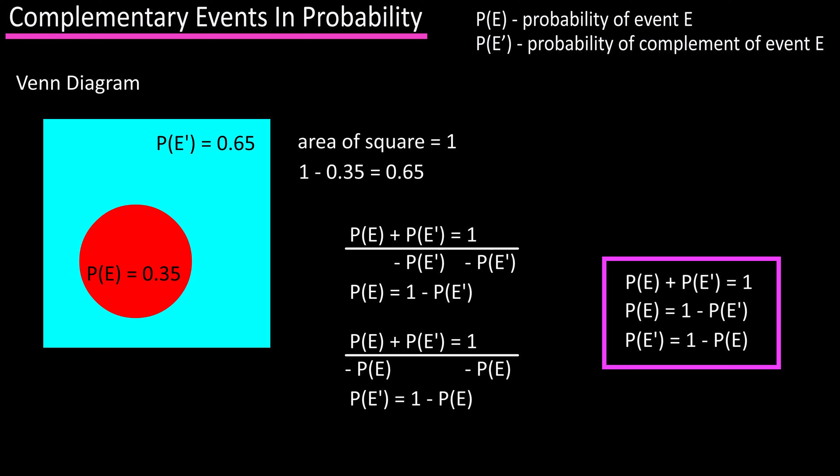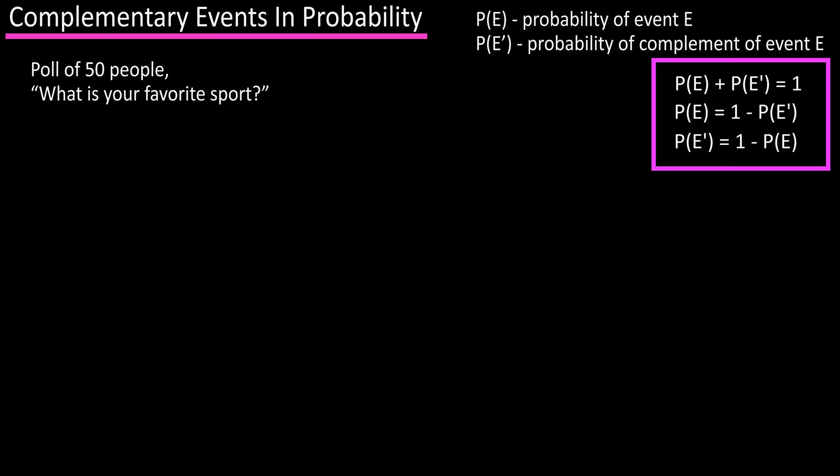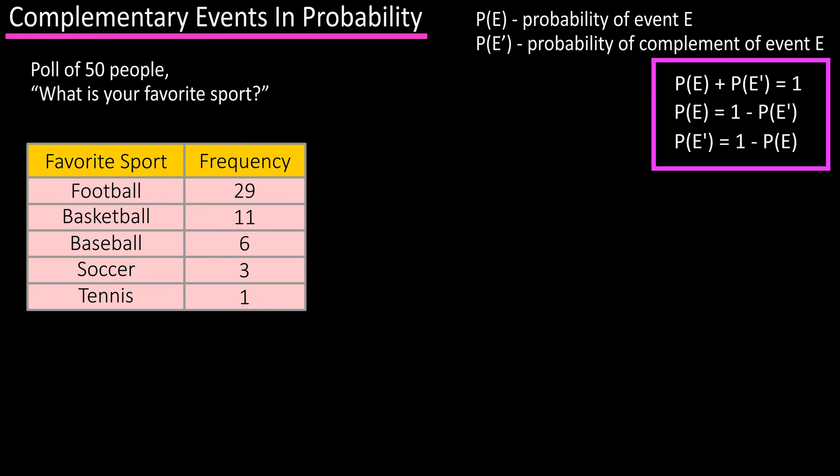And these equations can come in handy. For instance, let's say you polled 50 people and asked them what their favorite sport is. Using a frequency table, 29 said football, 11 said basketball, 6 said baseball, 3 said soccer, and 1 said tennis. Based on the data in this table, what is the probability of randomly selecting someone whose favorite sport is not football?